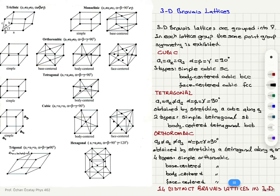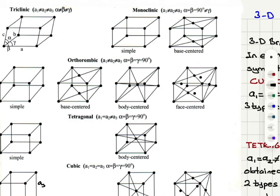Then we have orthorhombic. A1, a2, and a3 are not equal; alpha, beta, and gamma are 90 degrees. This is obtained by stretching a tetragonal along a1 or a2. There are four types of orthorhombic: simple orthorhombic, base-centered orthorhombic, body-centered orthorhombic, and face-centered orthorhombic.